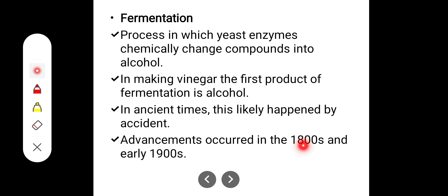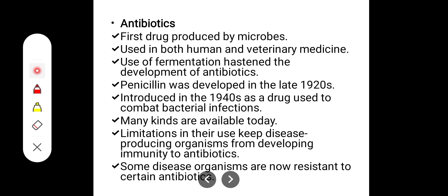Advancements occurred in the 18th and 19th century. Antibiotics were the first drugs produced by microorganisms — Alexander Fleming discovered penicillin, used in both human and veterinary medicine. Use of fermentation extended the development of antibiotics. Penicillin was developed in the late 1920s and introduced in 1940 as a drug to combat bacterial infections. Many kinds of antibiotics are available, like tetracyclines, cephalosporins, and others.